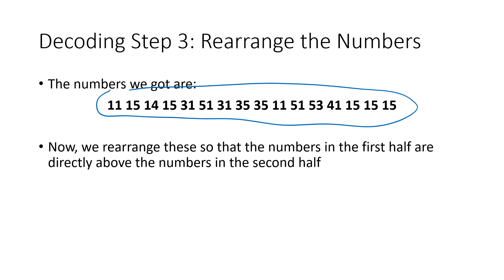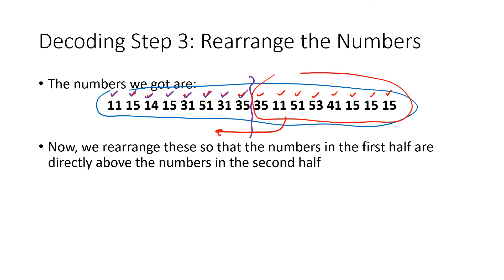That list of numbers then needs to be split in half. To find the exact halfway point, I count how many pairs of numbers I have — there are 16 pairs. Since half of 16 is 8, I chop the list after pair number eight. This is why the message needs to have an even number of letters — so this split works out correctly.